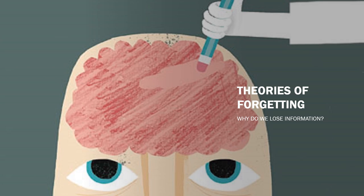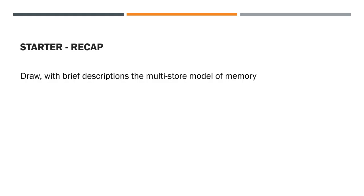This lesson looks at theories of forgetting. For your exam you need to know two different theories of forgetting: interference and retrieval failure. This lesson we will go through interference, and then we will look at retrieval failure very soon. So interference is our topic for today — let's have a look at our starter.